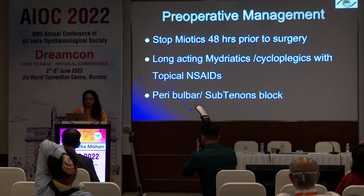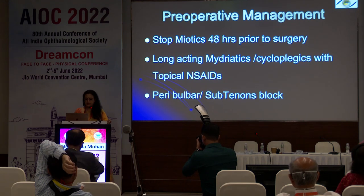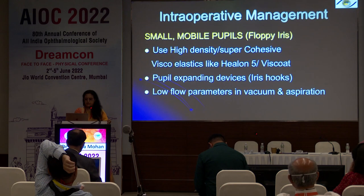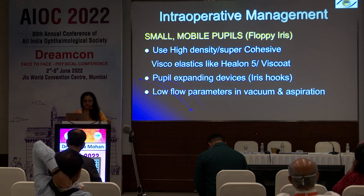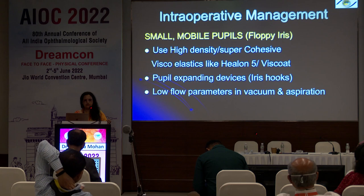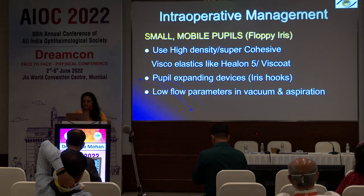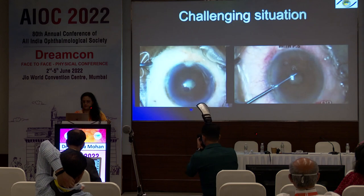Preoperative management includes stopping miotics, using long-acting mydriatics, and giving a peribulbar or sub-Tenon's block in these patients because you are anticipating some problems. Intraoperatively, for floppy iris, use high-density viscoelastic, but it is always better to anticipate this problem and be ready with a pupil-expanding device like iris hooks. Use low flow parameters in vacuum and aspiration.